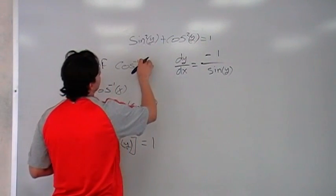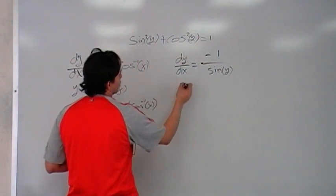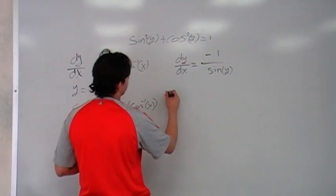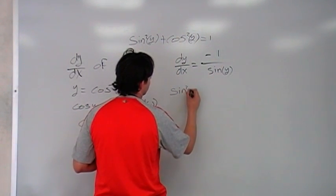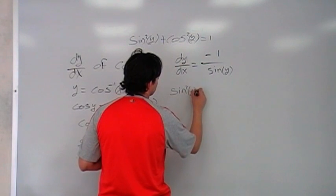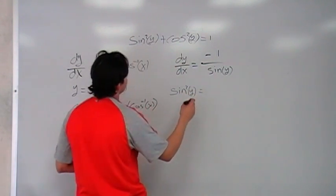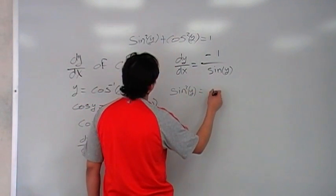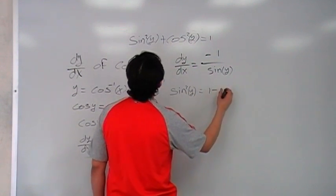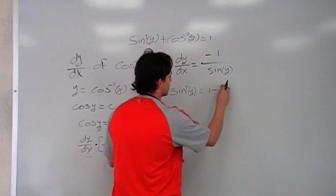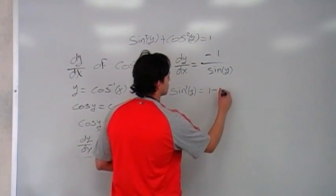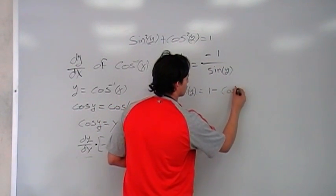And we know that going in this direction, we're going to have like sin, sin squared of y is equal to the 1 minus cosine, cosine squared, cos squared of y.